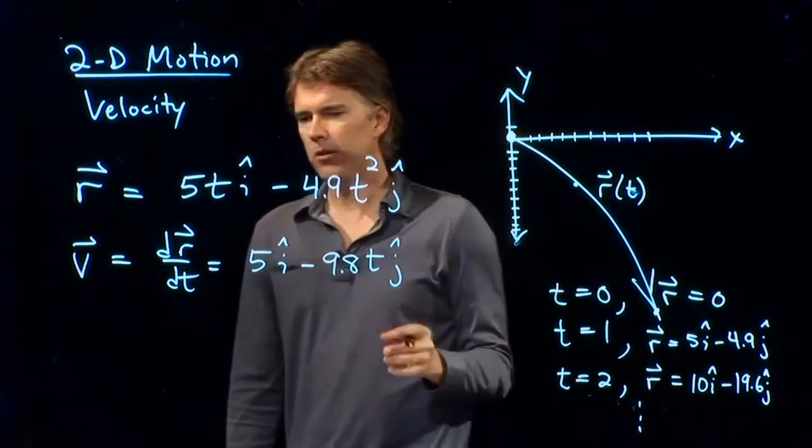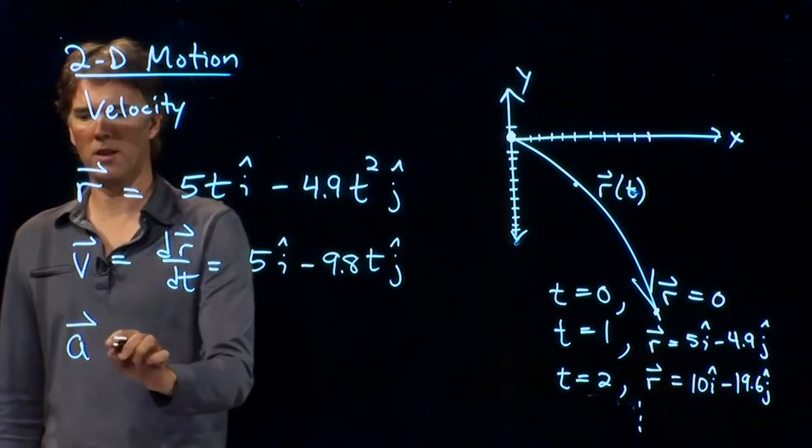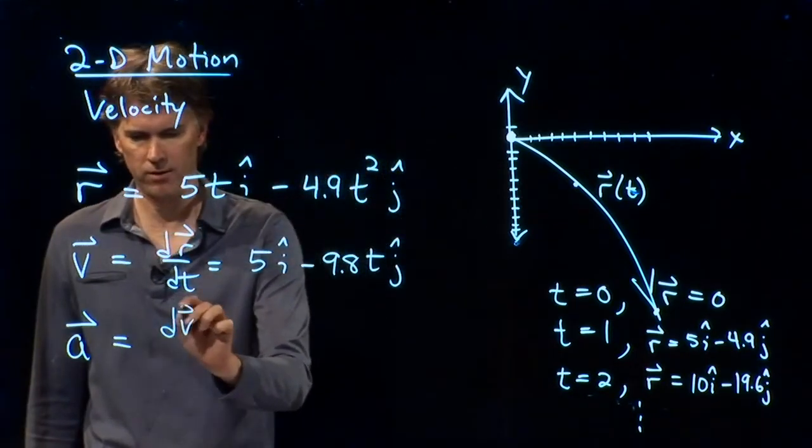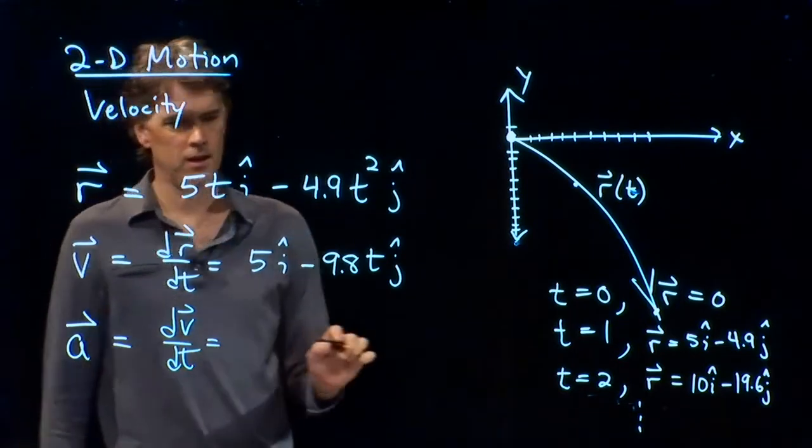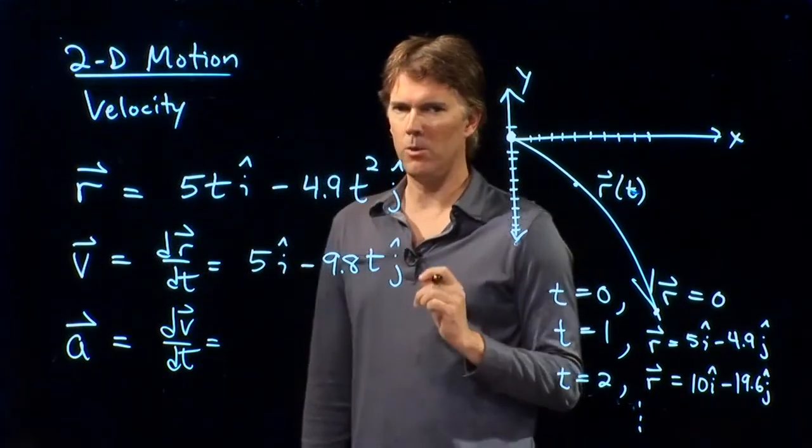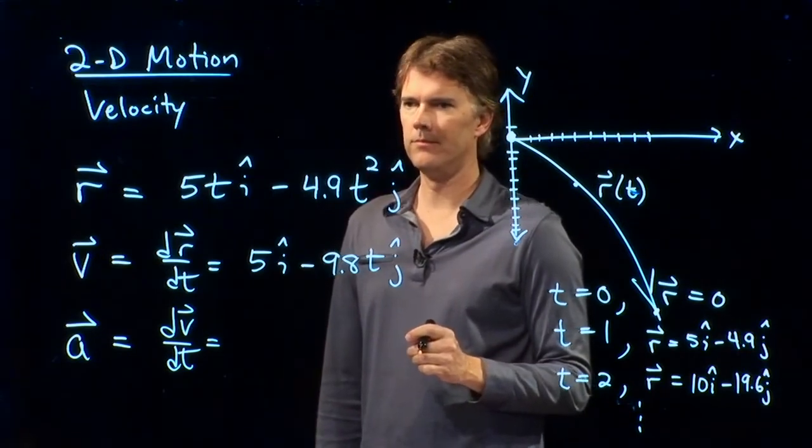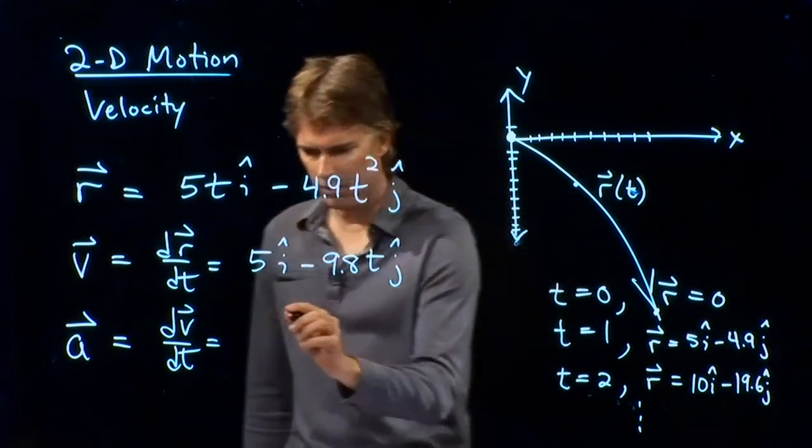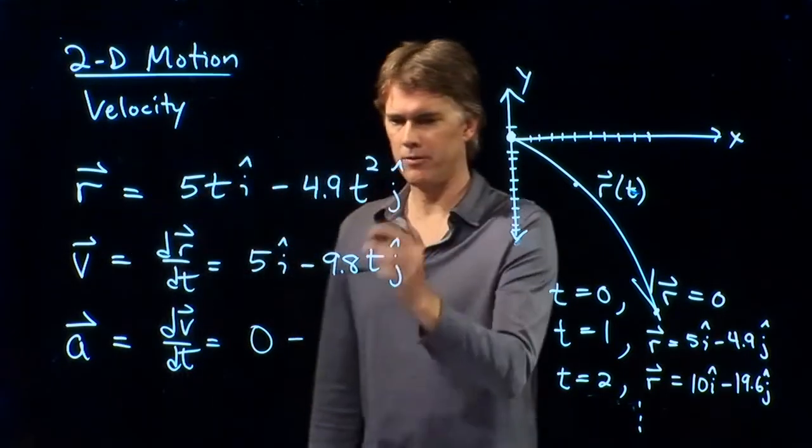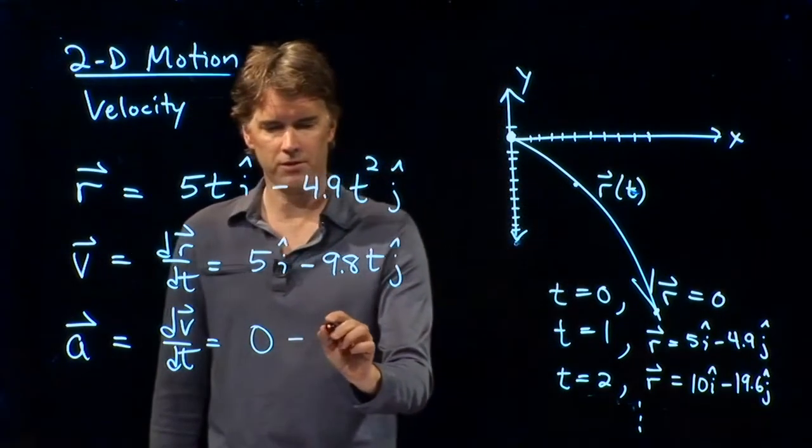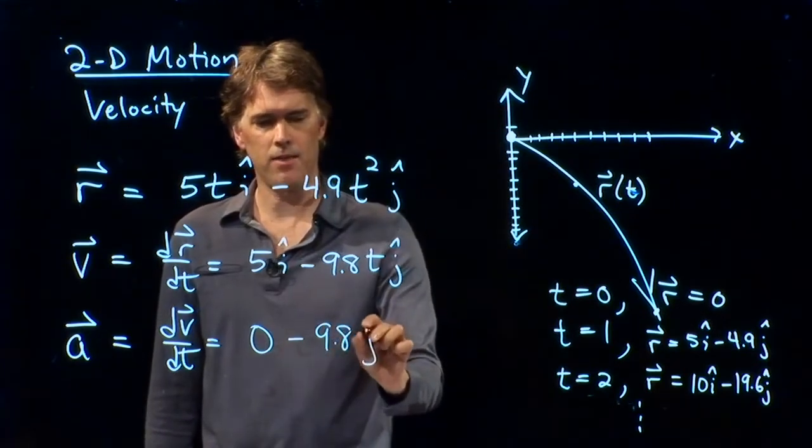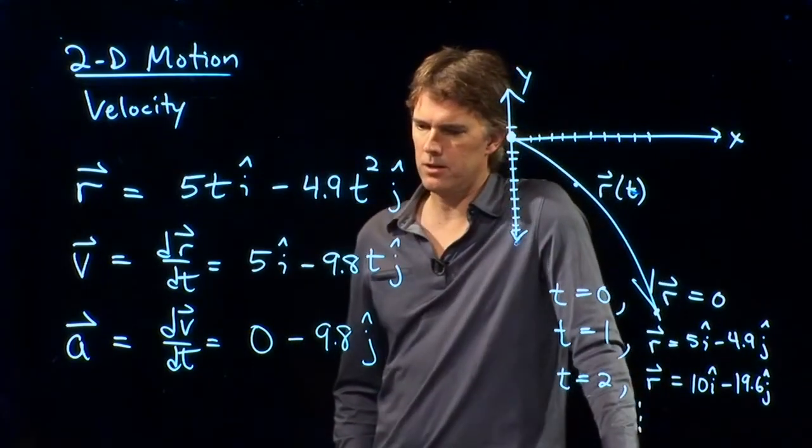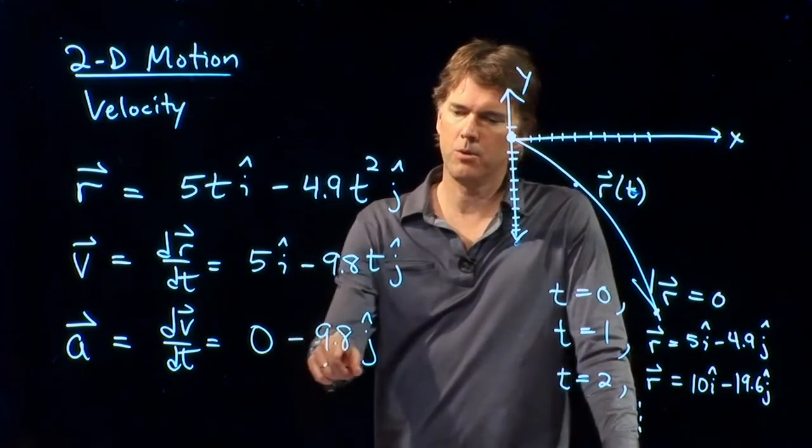And so, that's the velocity as a function of time. And you could plot it out similarly to how we did right here. Let's say we take it one more step, and we want to calculate the acceleration. What we know is that acceleration is the derivative of the velocity. If I take a derivative of 5 i-hat, what do I get? Yeah. Zero. It's a constant. There's no time in there at all. So, the derivative of that is zero. If I take a derivative of 9.8t, I, of course, just get 9.8. And then there is still a j-hat hanging on there. So, the acceleration is negative 9.8 j-hat.